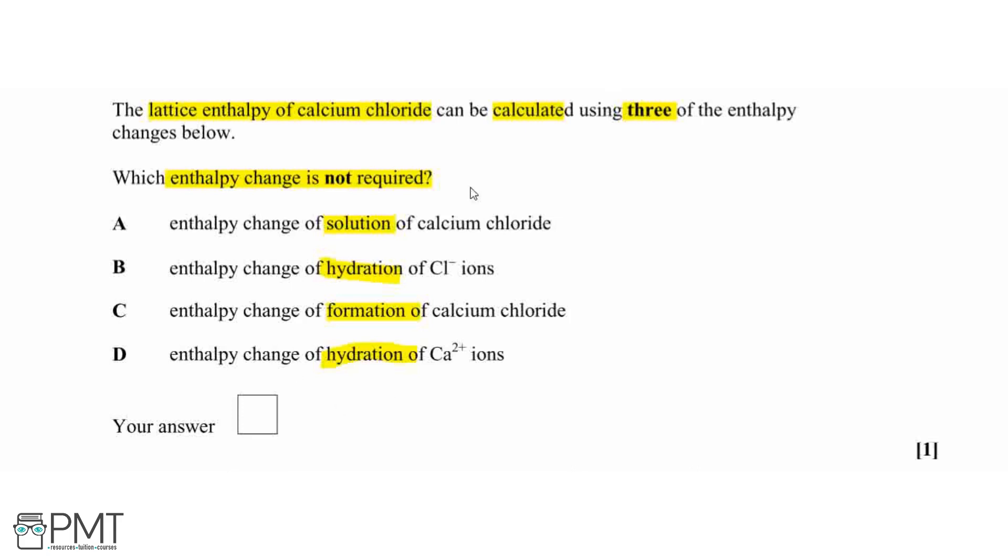But here we can see that we've got the data for the enthalpy change of solution of our compound, and then the hydrations of the respective ions. So if I just draw out what a cycle would look like, then we can see which enthalpy change we do not need.